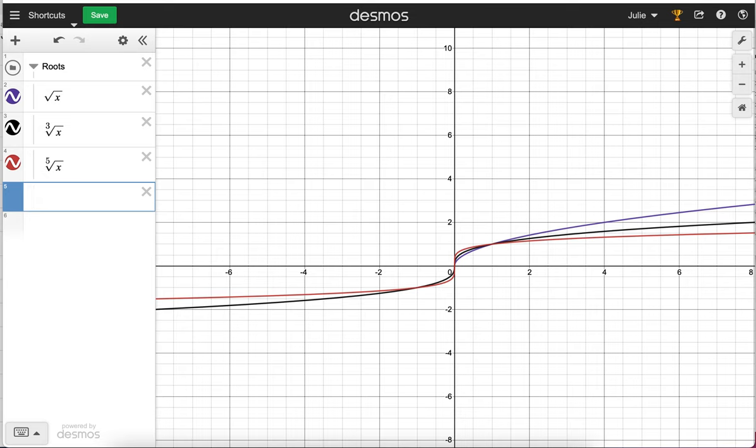Desmos can also do Greek letters, so we will do a new folder and put for Greek letters. For pi, you literally type P-I. For theta, T-H-E-T-A, there's theta.